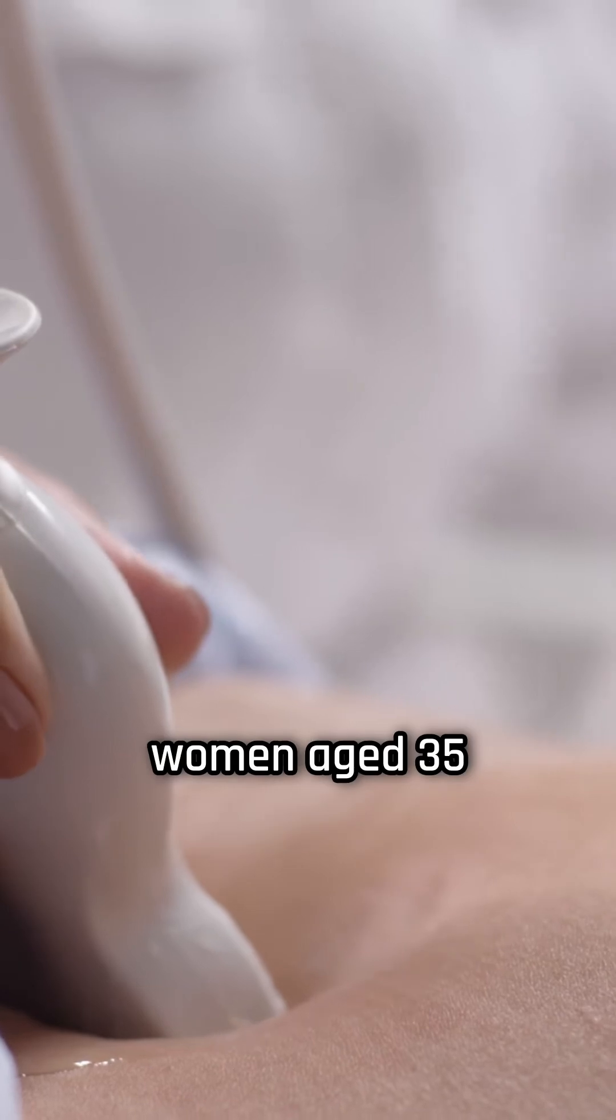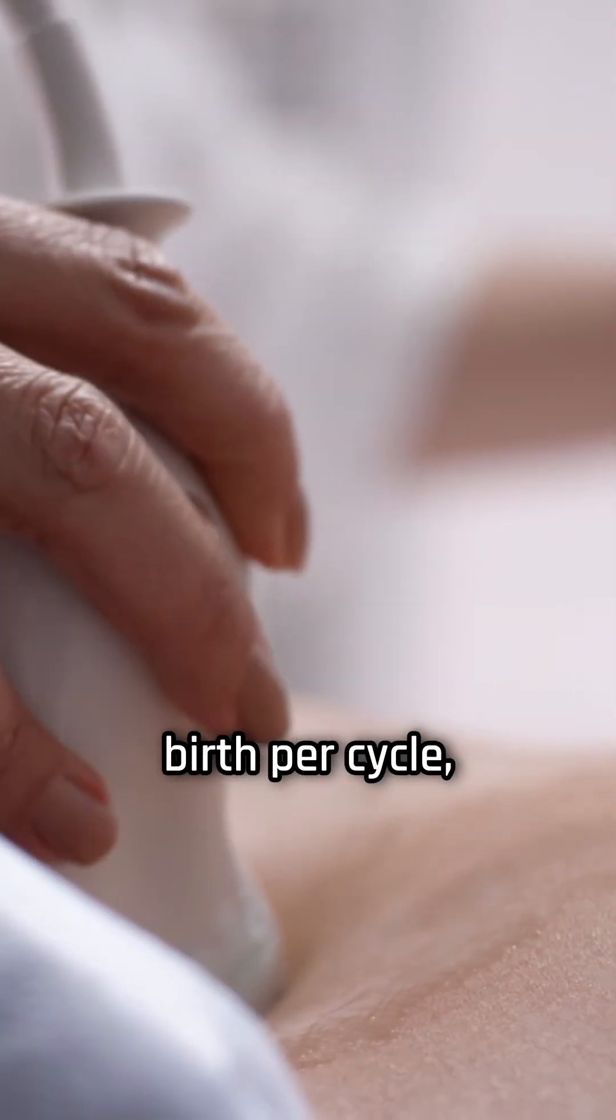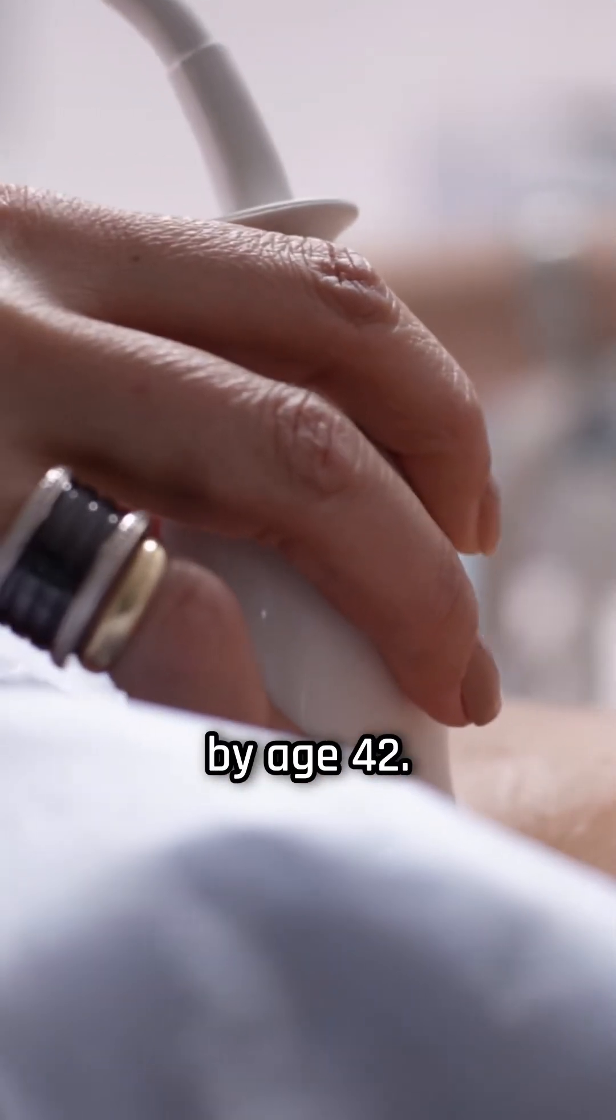For example, women aged 35 have about a 30% chance of a live birth per cycle, but that drops to just 10% by age 42.